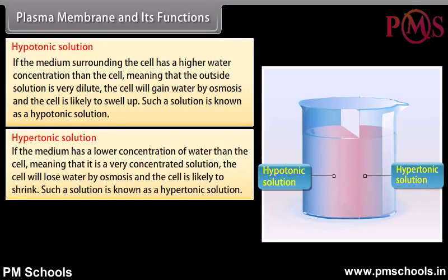If the medium has a lower concentration of water than the cell — meaning it is a very concentrated solution — the cell will lose water by osmosis and is likely to shrink. Such a solution is known as a hypertonic solution.